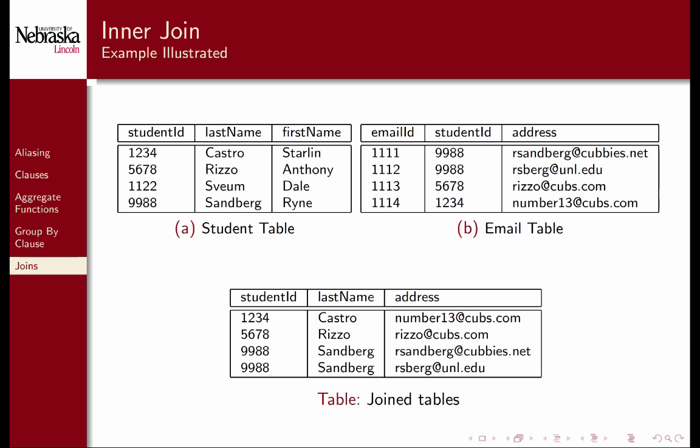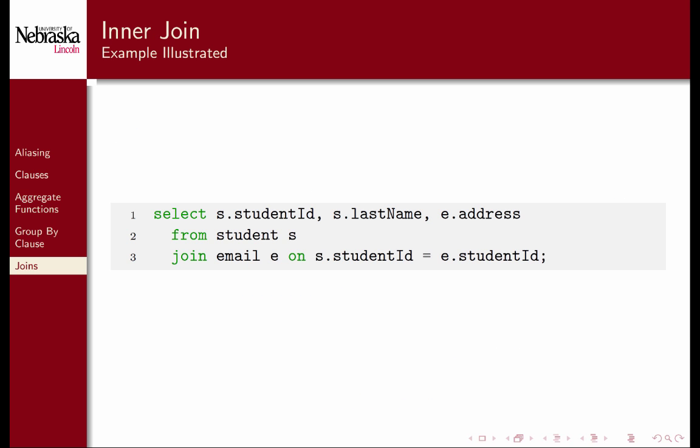Suppose that we have some student records in a student table and email records in an email table related by a student ID foreign key. We can join these two tables together on their foreign key values. For example, the student record 1234 for Starlin Castro matches a single email record with the email ID 1114 in the second table, giving us the first result below. Likewise, with the Anthony Rizzo record, Ryan Sandberg's student ID matches two records in the email table, matching two records in the joined result. However, Dale Swiem does not match any records in the email table, and so it is not present in the joined result below. The syntax that achieved these results would look something like this. Select the appropriate columns from student S join email E on their matching student ID values.